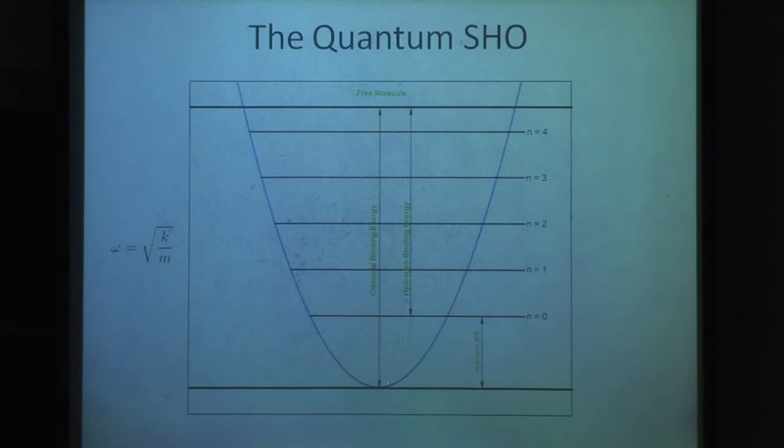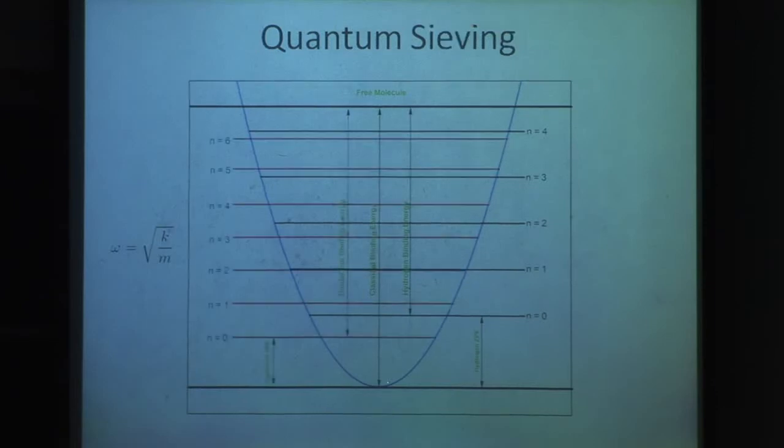For hydrogen and deuterium, we're saying the spring constant k is effectively the same for the two, and we're attributing the difference in zero-point energies to the mass. What happens when we throw D₂ on this graph? You can see more closely spaced energy levels and the ground state is lower, so the difference between this ground state and the free molecule is greater, which amounts to a higher binding energy.